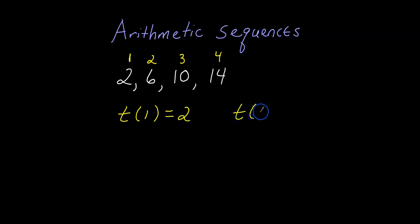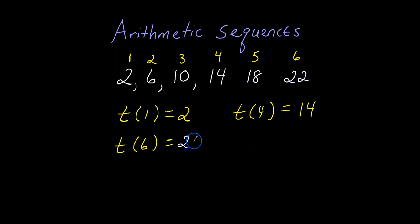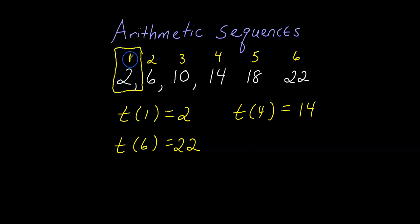So T(4) equals 14. What about T(6)? We don't have term 6 listed, so we'd have to extend the sequence: 14 plus 4 is 18, 18 plus 4 is 22. So term 6 equals 22. Also, note that some people call the first term 'term 0,' but in my videos I always call the first term I see 'term 1.' So here, term 1 equals 2.